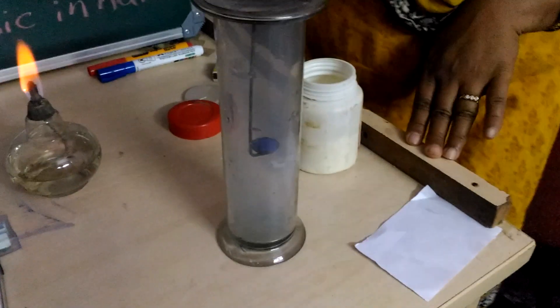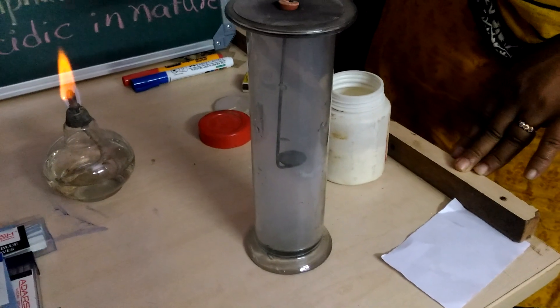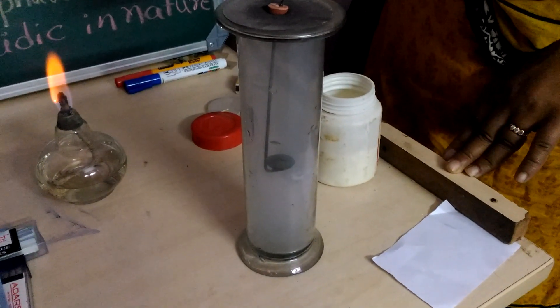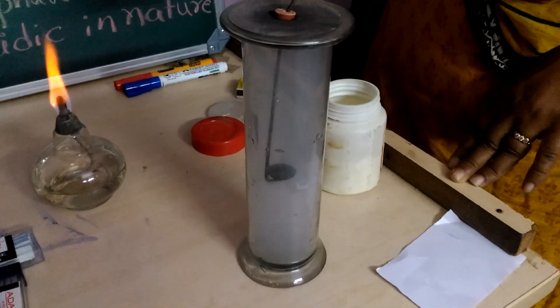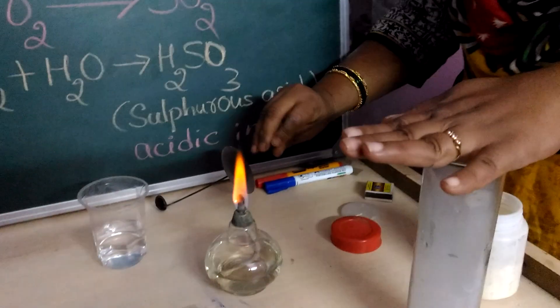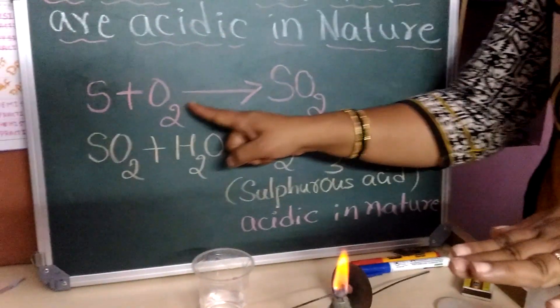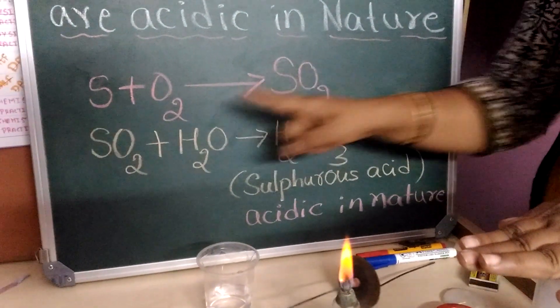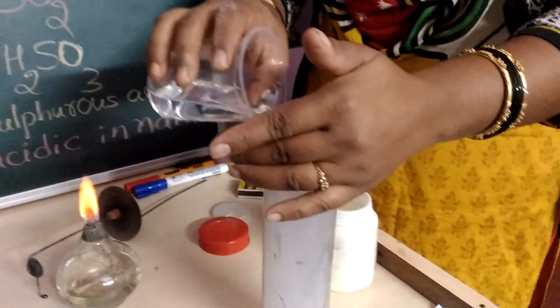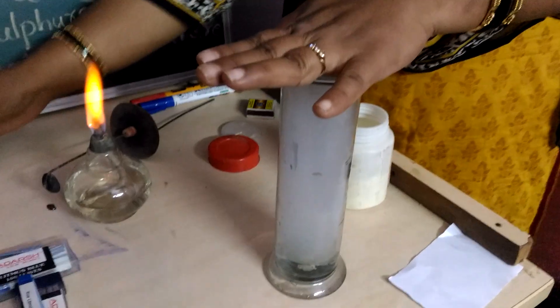The sulfur dioxide gas is collecting in the jar. Okay, enough. When sulfur reacts with the oxygen in the air, it forms sulfur dioxide. Let us dissolve the sulfur dioxide in water. Shake well.